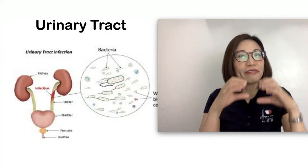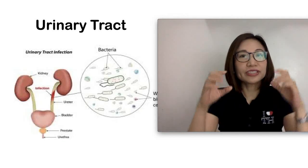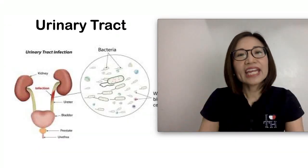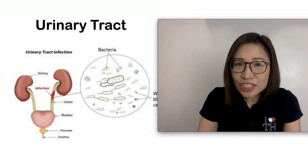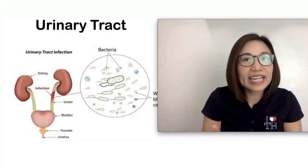It is composed of urinary bladder, two ureters, and two kidneys. And urinary tract infection happens when bacteria gets inside.